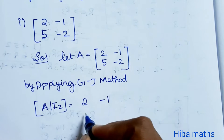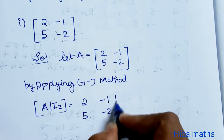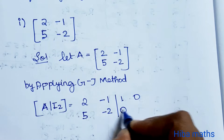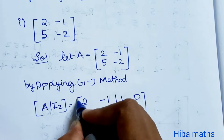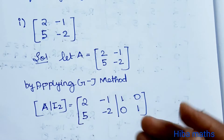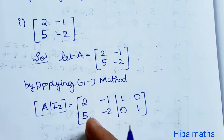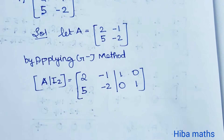We write the augmented matrix as [2, -1 | 1, 0; 5, -2 | 0, 1]. Our goal is to reduce the left side to the identity matrix [1, 0; 0, 1], at which point the right side will give us the inverse matrix.